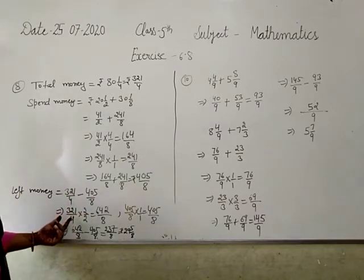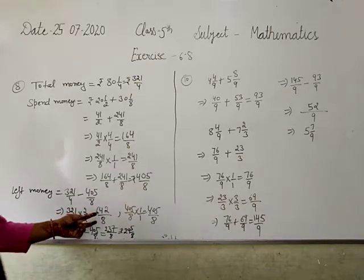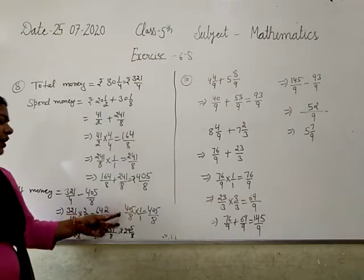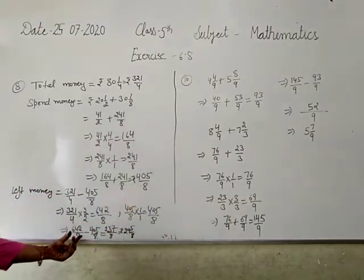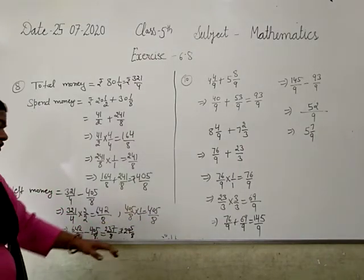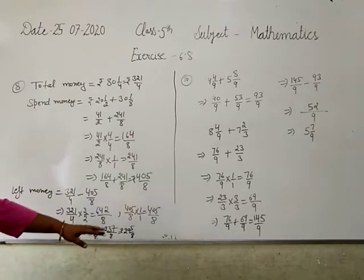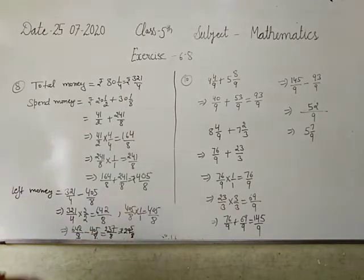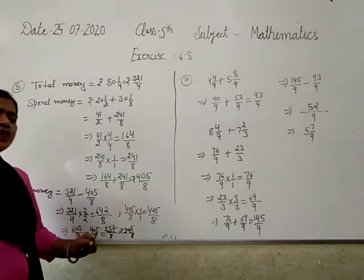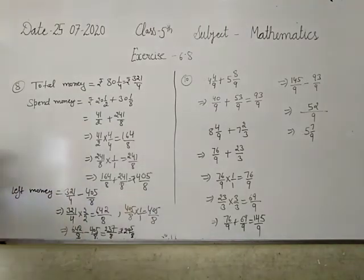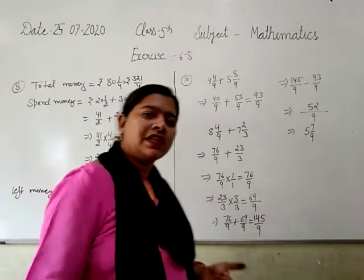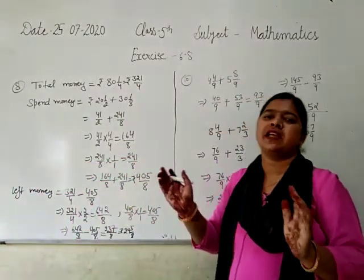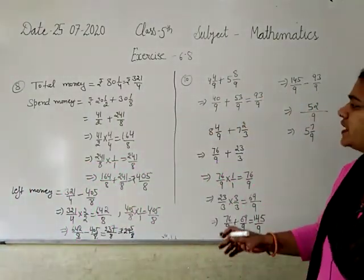To find left money, subtract spent money from total money. Total money 321 by 4 into 2 gives 642 by 8. Subtract 405 by 8. Like fractions with denominator 8, so subtract numerators. After subtraction, answer is 29 by 8 rupees. Next is 9th question - you try it yourself. It's the same: total is given, add two and subtract. You'll get it.